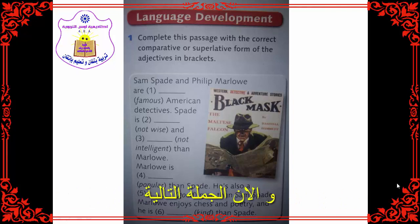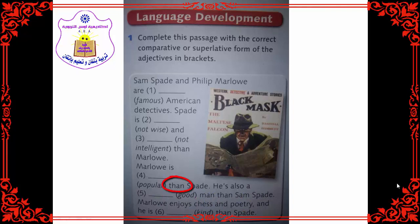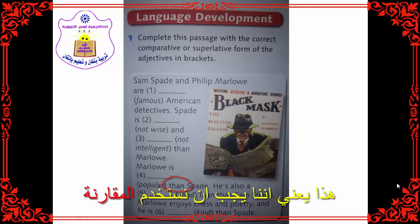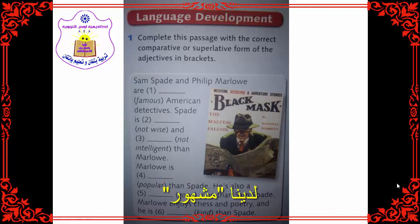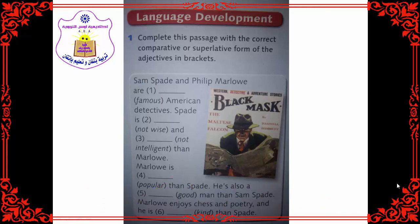Now the next sentence: Marlowe is — space — popular than Spade. We have 'than' here, so we must use the comparative. You have 'popular' — put it into the comparative form. Is it a long or short word? Think, please. It is long, so what will be the comparative form of 'popular'?